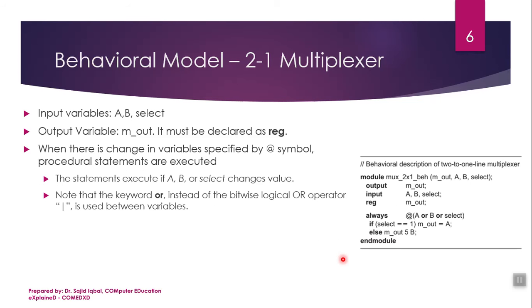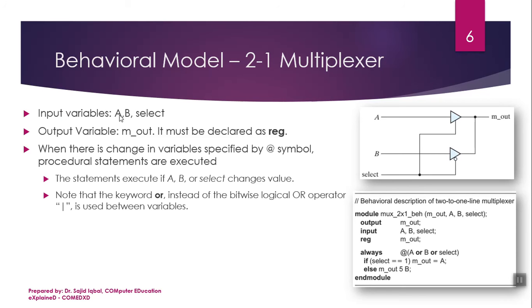Now we will look at the first example: behavioral model of 2-to-1 multiplexer. We have three input variables. If the value of select is 1, then input B will be selected on the output. And if the value of select is 0, then input A will be selected. The output variable m_out must be declared as registered. When there is a change in variable specified by the @ symbol, that is the control we discussed, procedural statements are executed.